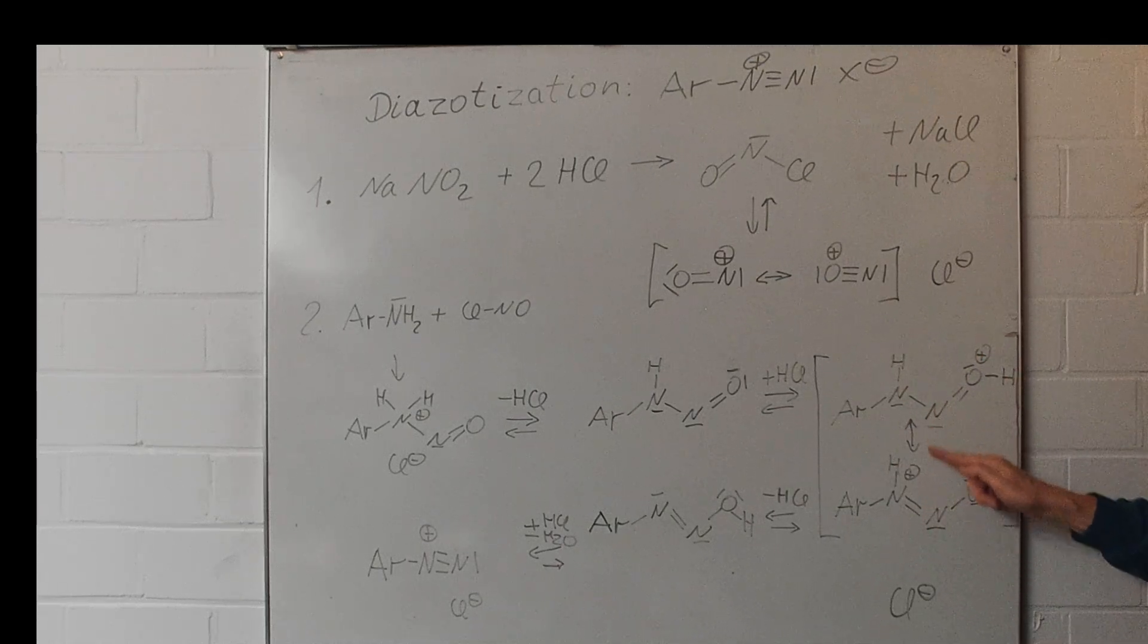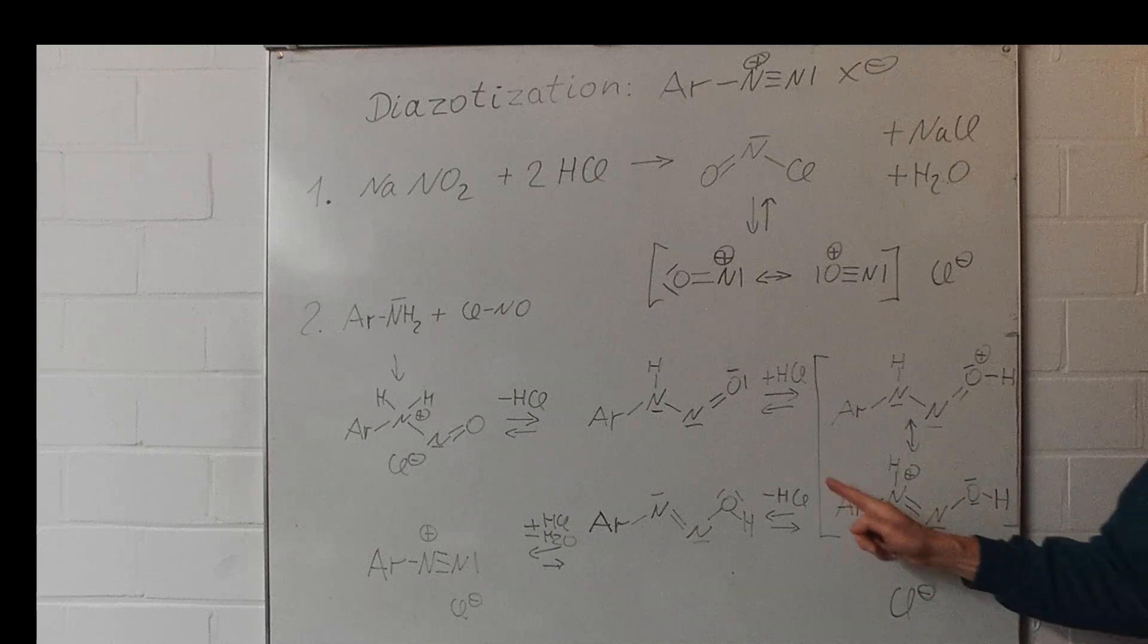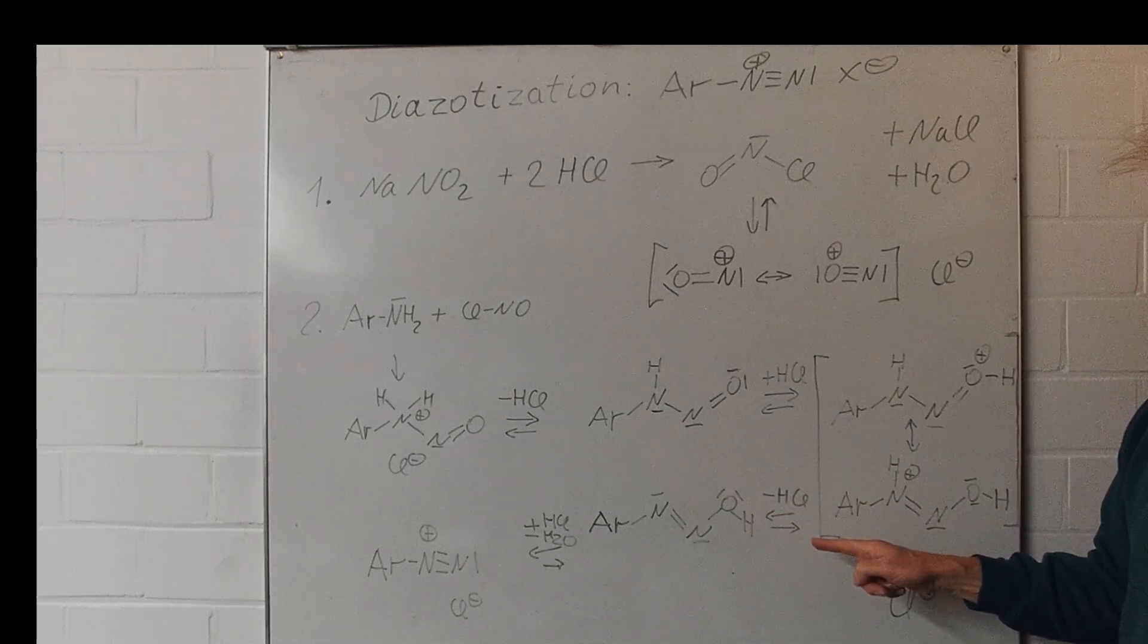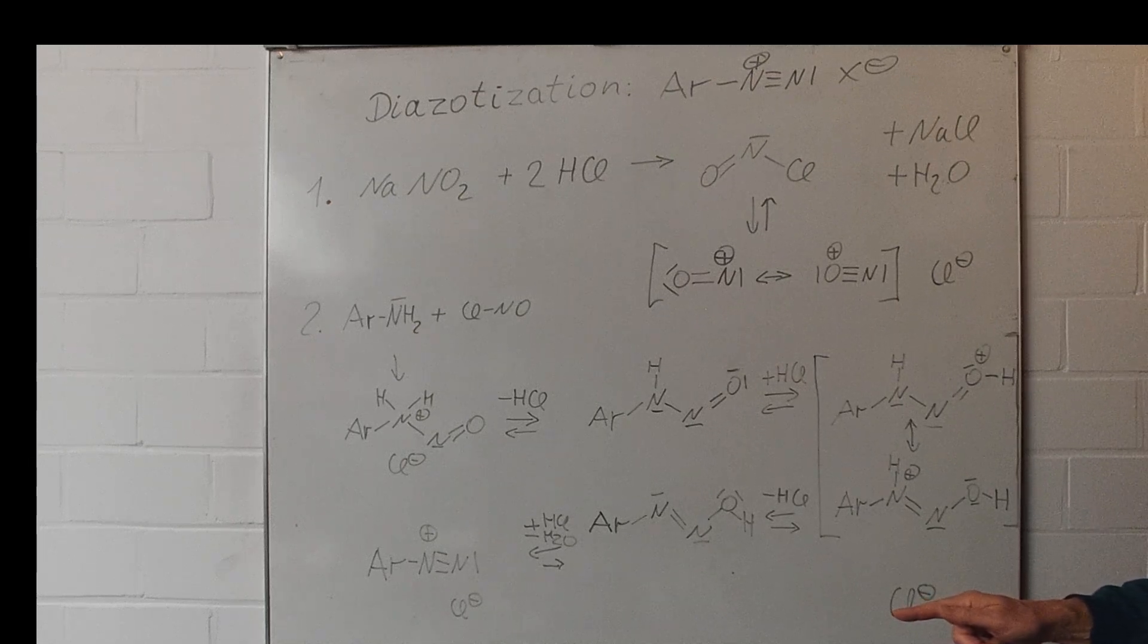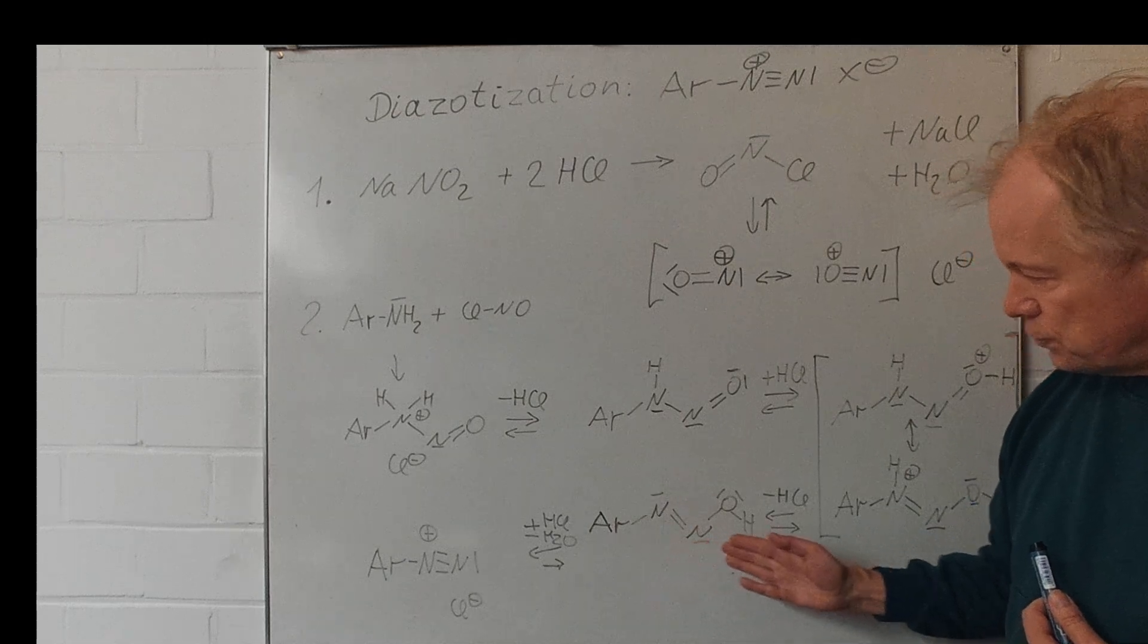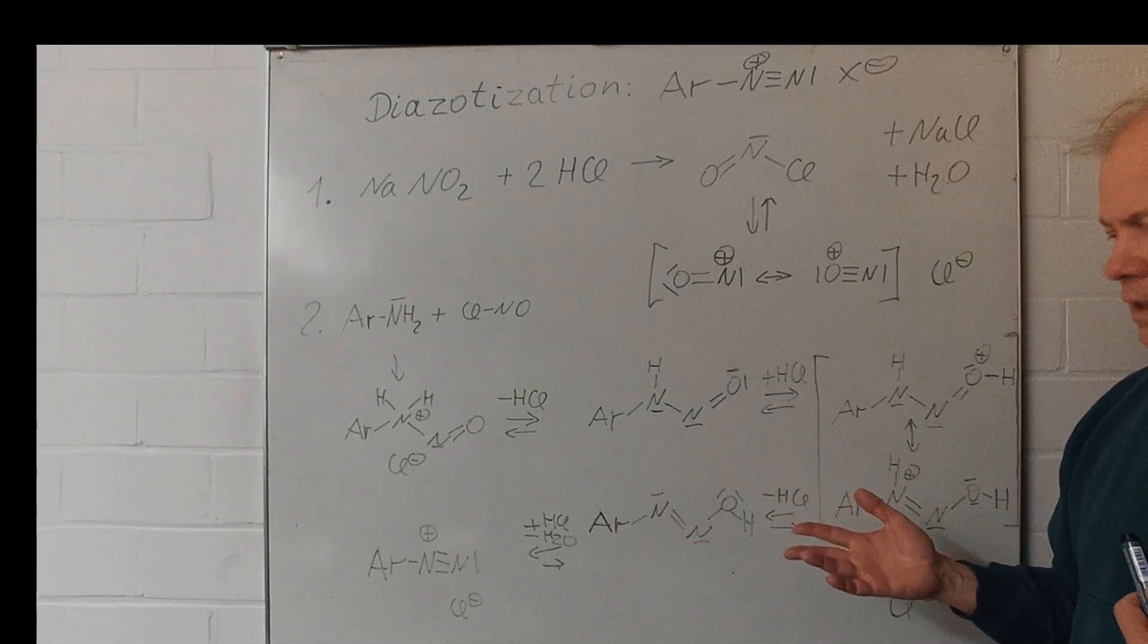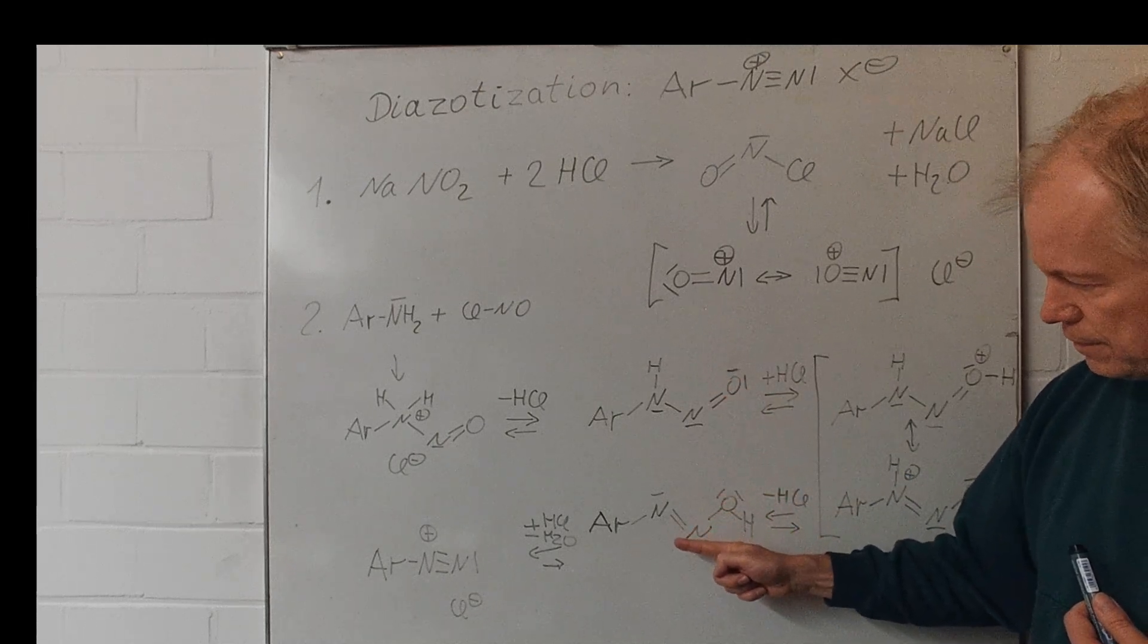If we eliminate HCl, then we will get to this structure, and now please keep in mind, if we compare this structure and that one, those are clearly tautomers.